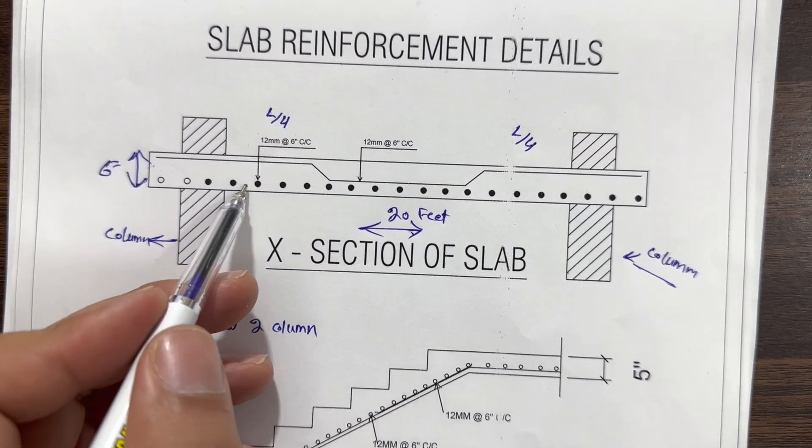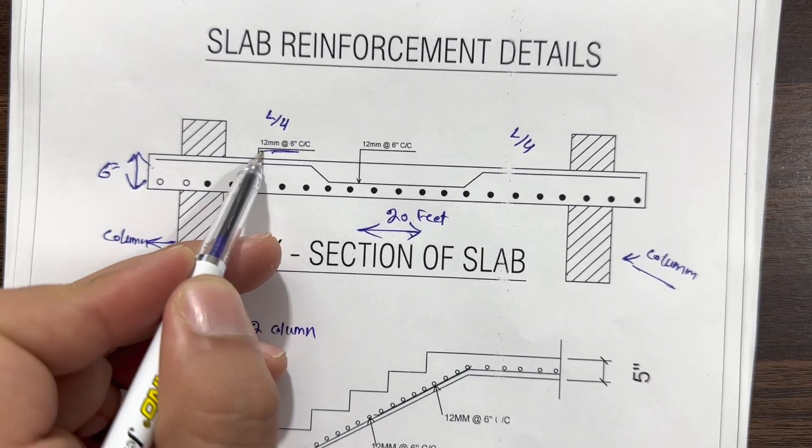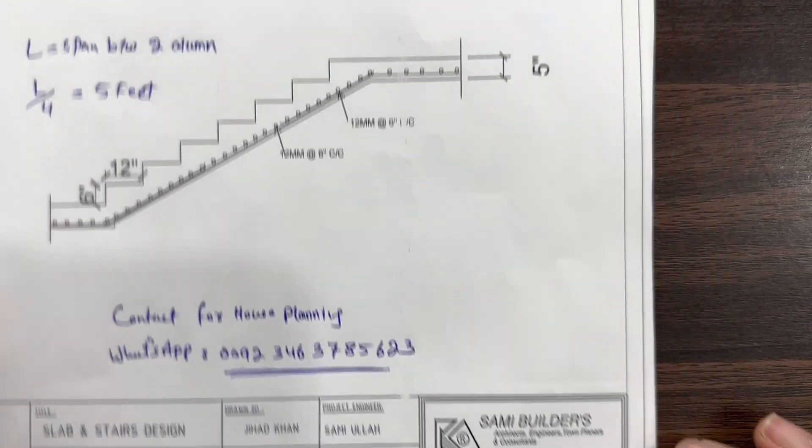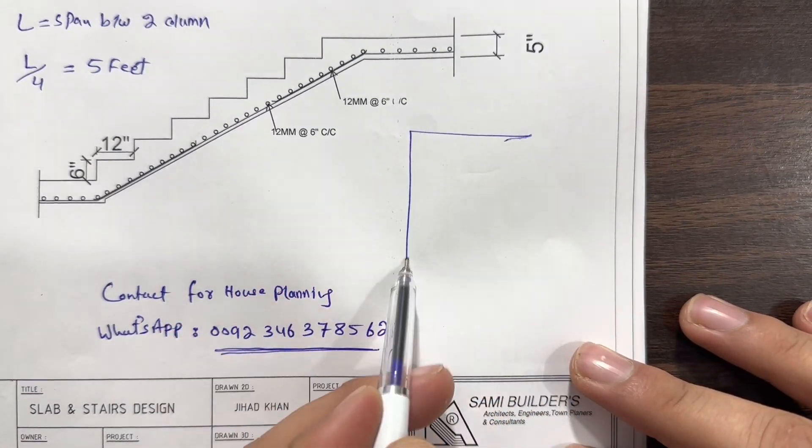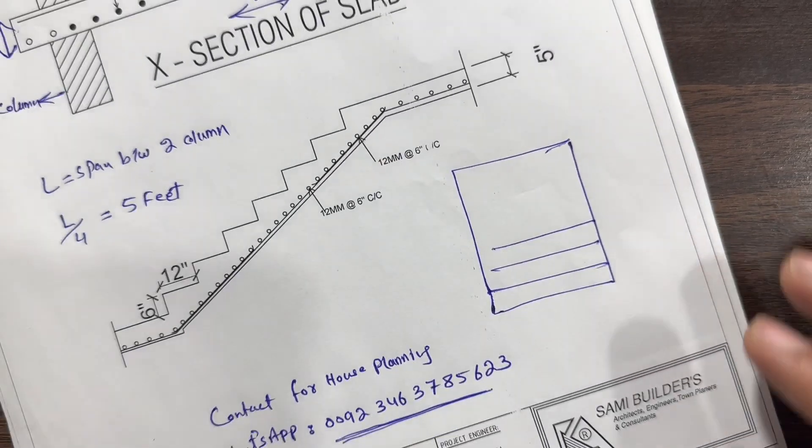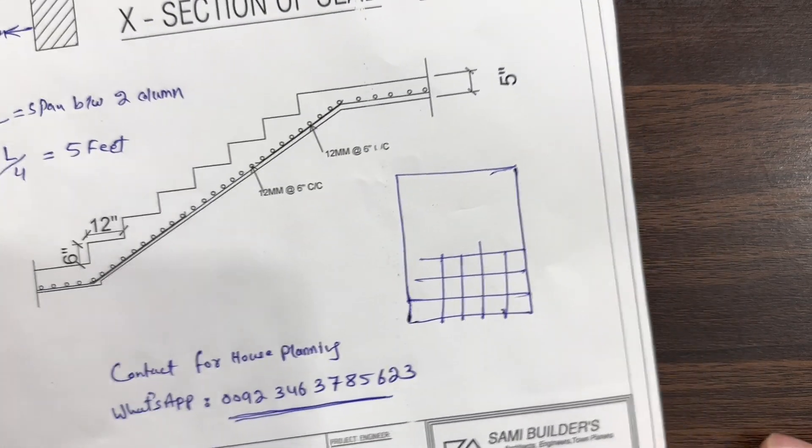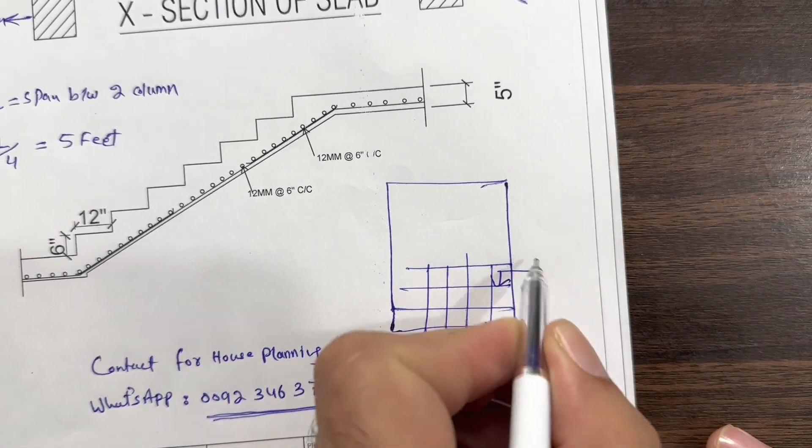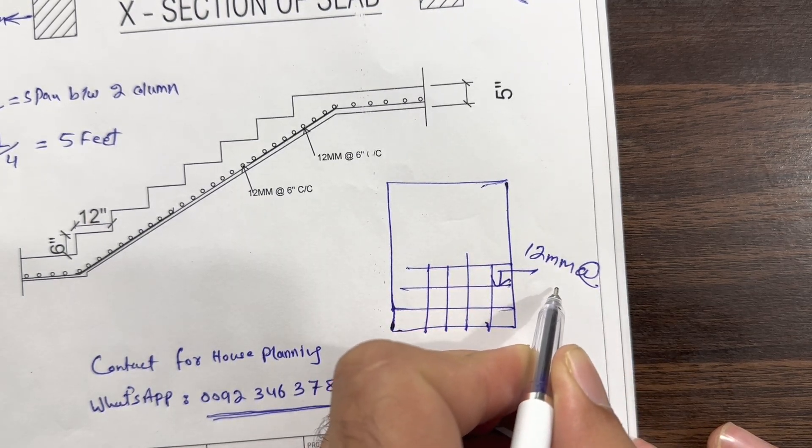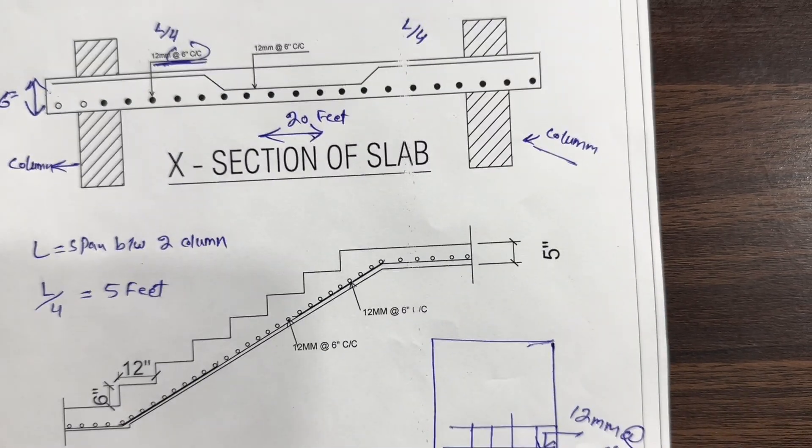You can see the main bars are here. The distribution bars dia is 12 millimeter with the spacing of 6 inches. Let me guide you in detail. So this is plan of slab. Here you can see these are spacing between two columns, spacing of main bars and distribution bars. This spacing is 12 millimeter dia of steel rod with the spacing of 6 inches C/C.